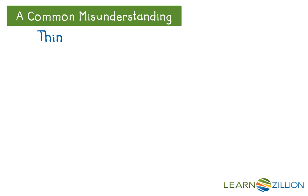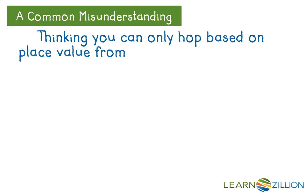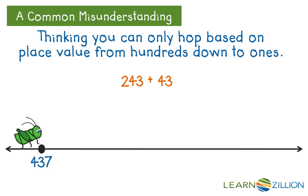A common misunderstanding is thinking you can only hop in order based on place value from hundreds down to ones. For example, in our last problem, we solved 243 plus 437 by hopping first up 200, then 40, then 3.